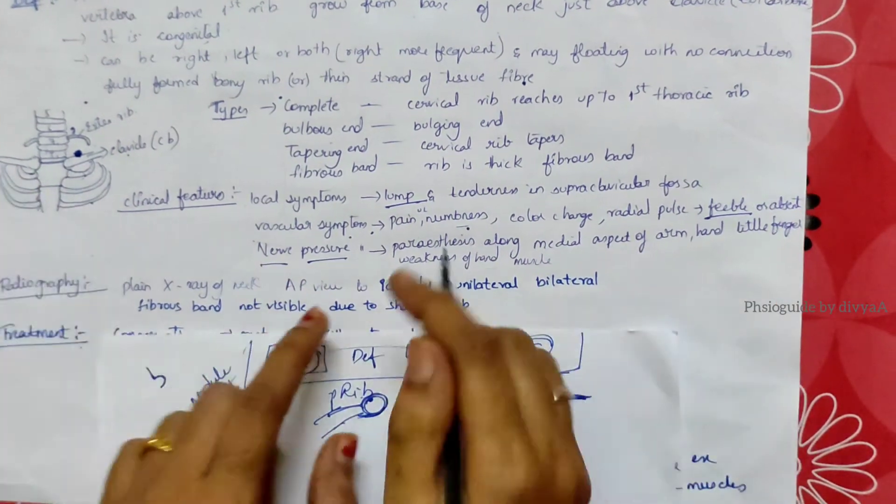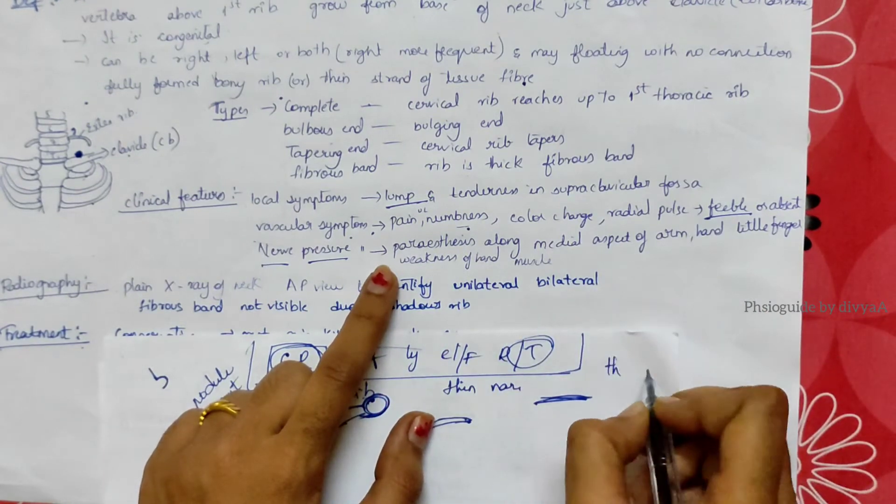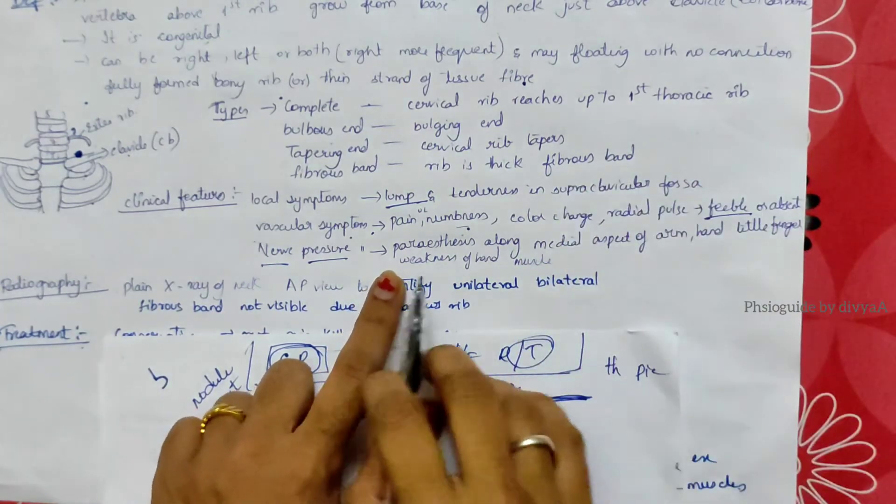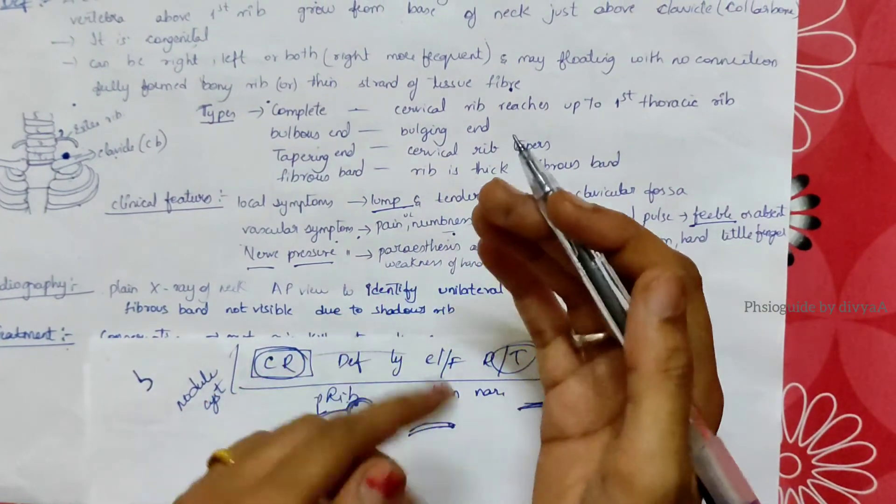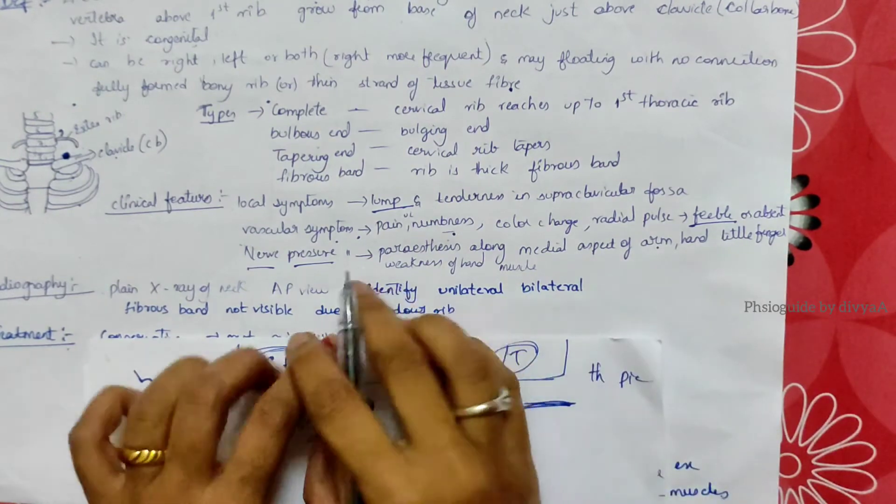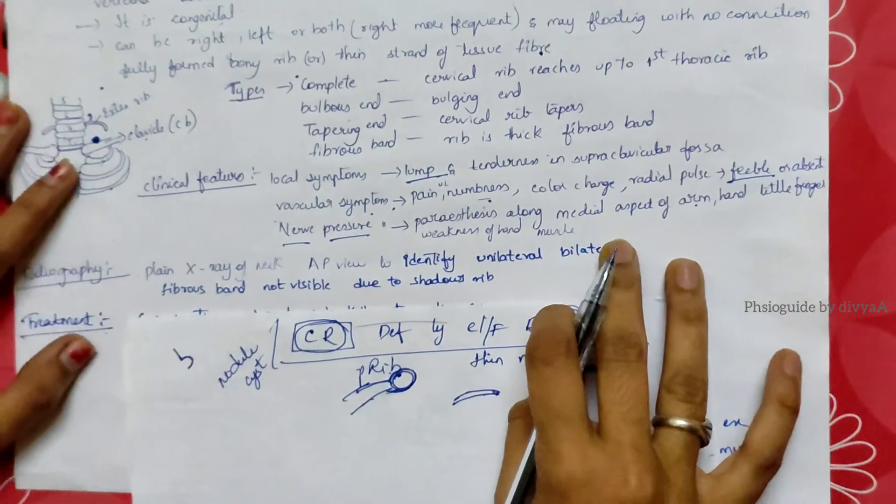Pressure on the nerve causes paresthesia, meaning nerve tingling and pricking sensation like needle pricking, along the medial aspect of the arm and hand, little fingers, and there will be weakness of hand muscles.